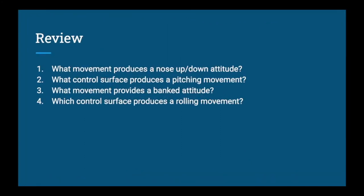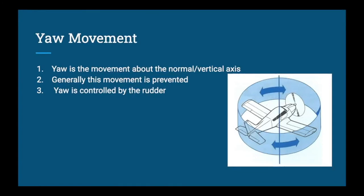Review questions: What movement produces a nose-up or nose-down attitude? Pitching. What control surface produces the pitching movement? The elevator. What movement provides a banked attitude? Rolling. What control surface produces the rolling movement? The ailerons.